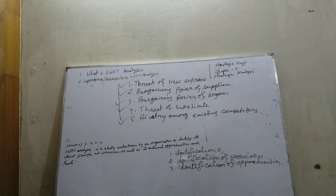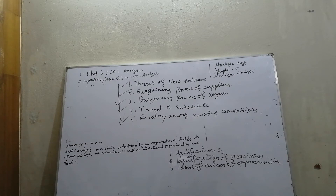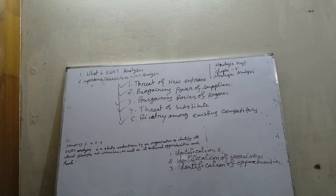Bargaining power of buyers: buyers have the power to demand lower prices or higher product quality from industry producers when their bargaining power is strong. Lower prices mean lower revenue for the producer. Buyers extract strong bargaining power when buying is large in quantity or they control many access points to the final customer, only few buyers exist, switching costs to other suppliers are low, they threaten to backward integrate, there are many substitutes, and buyers are price sensitive.